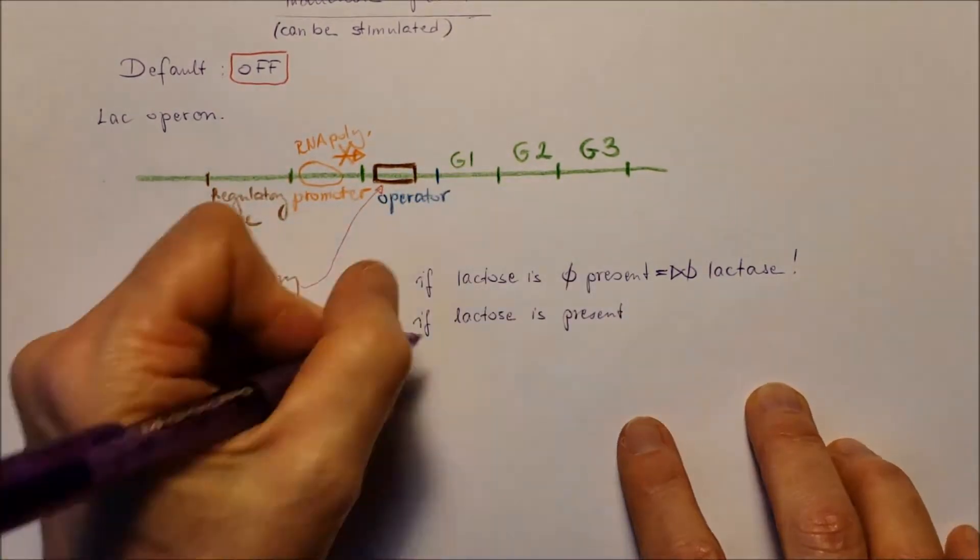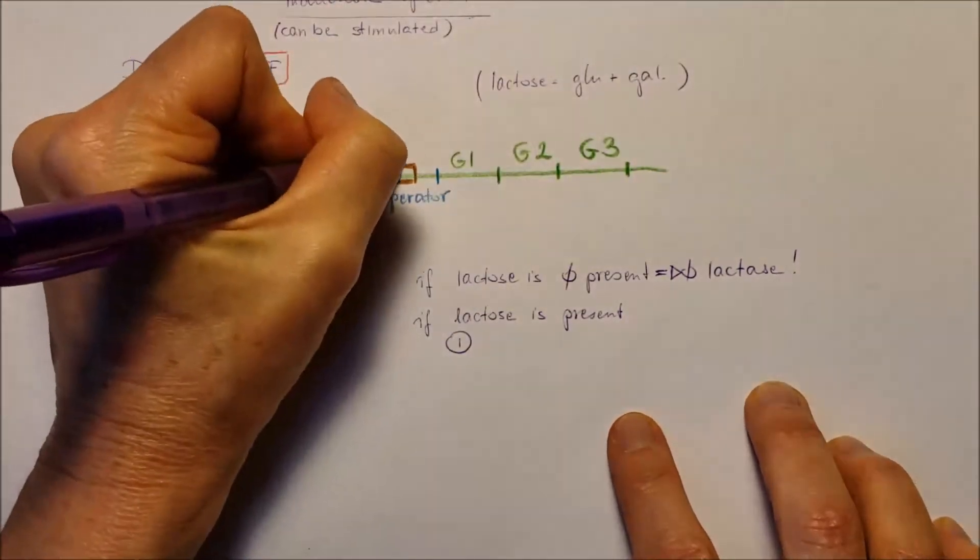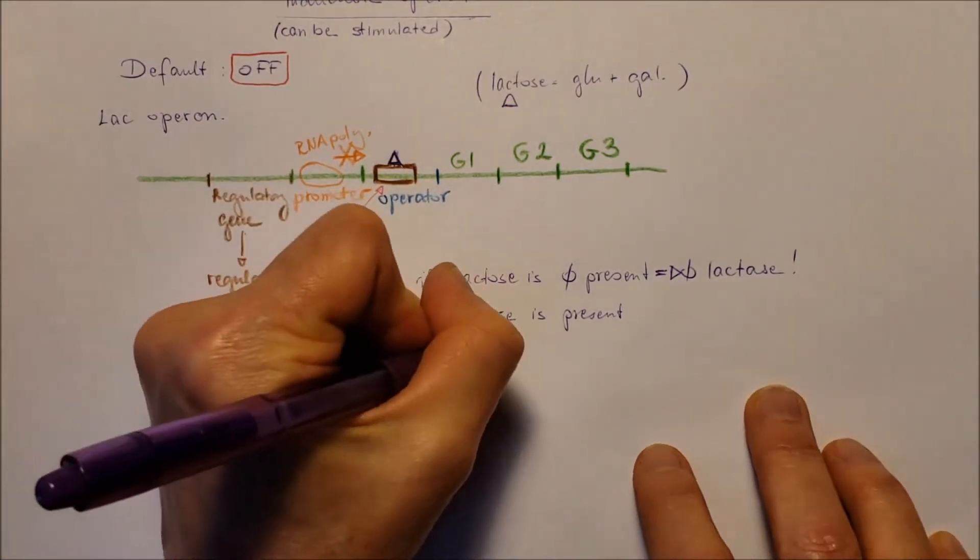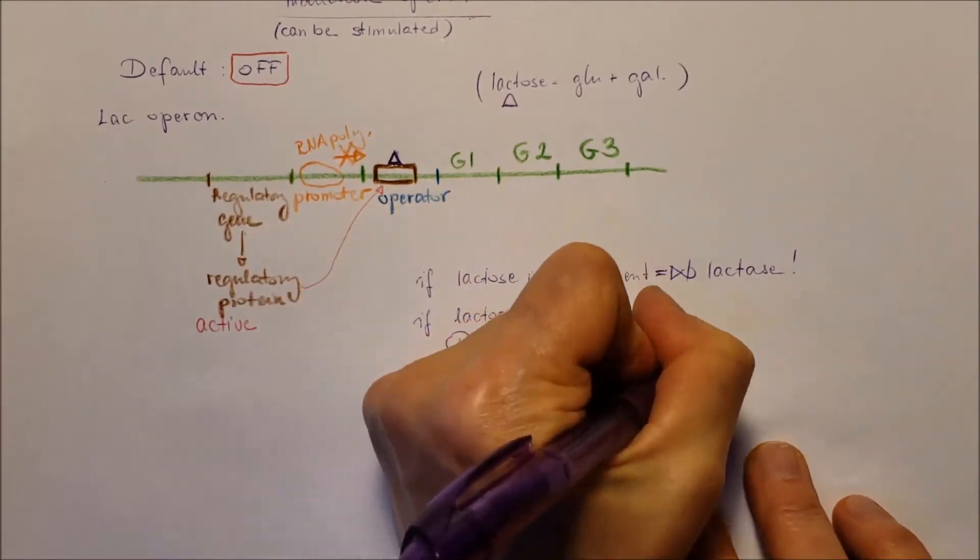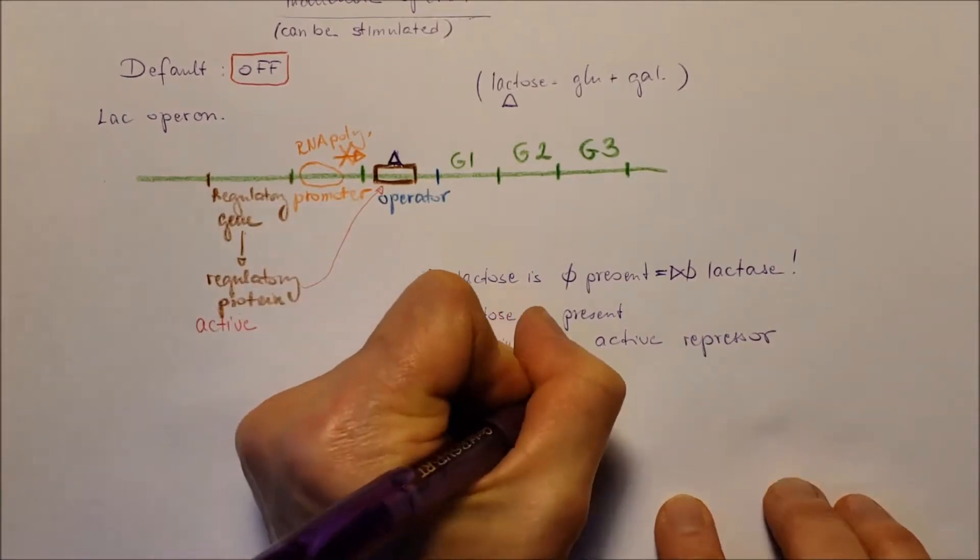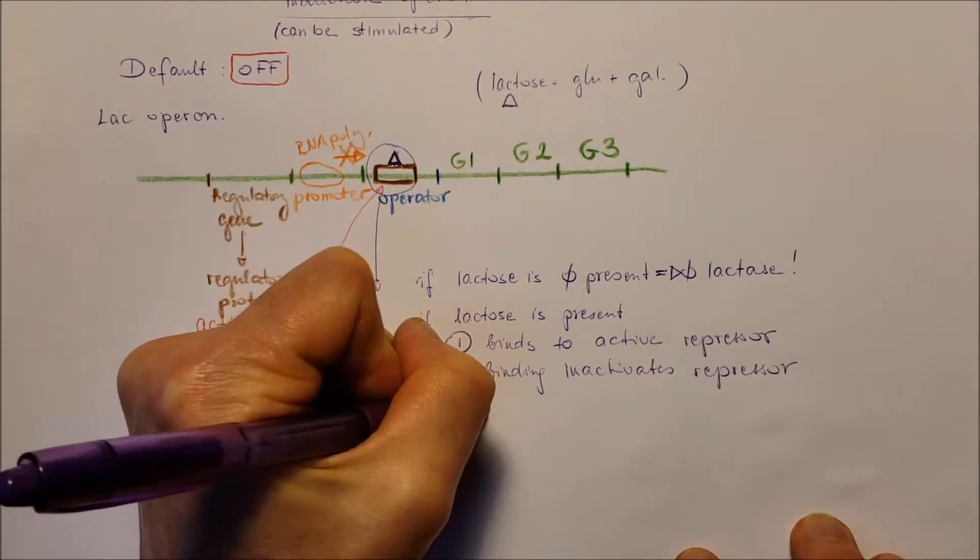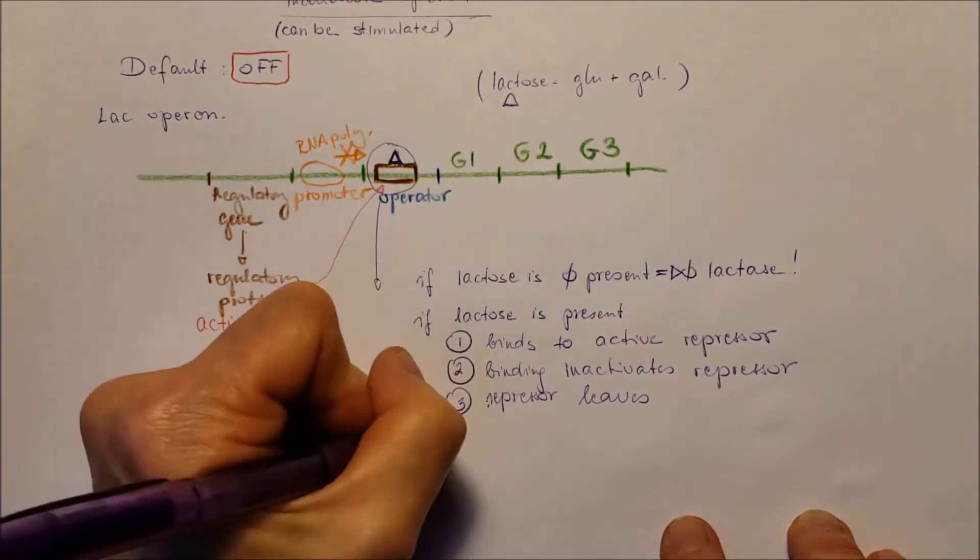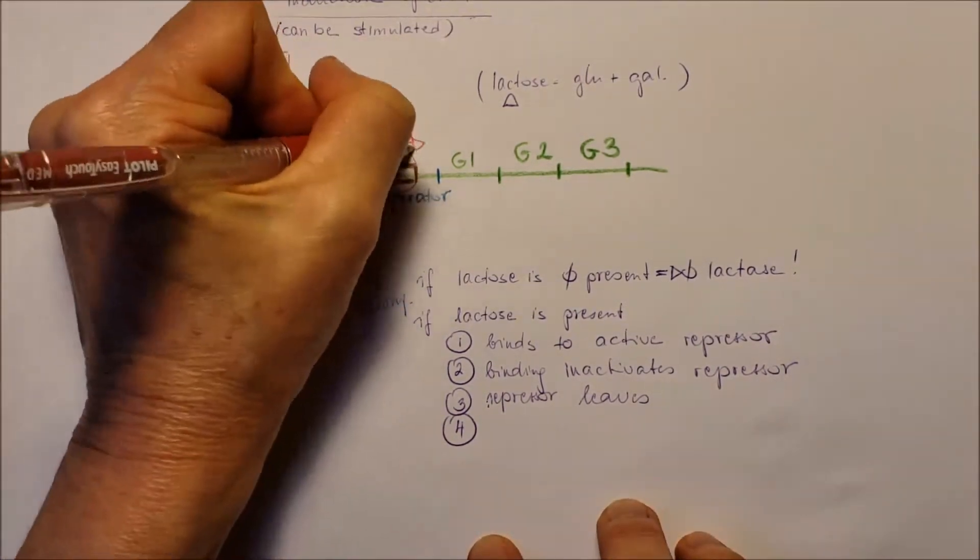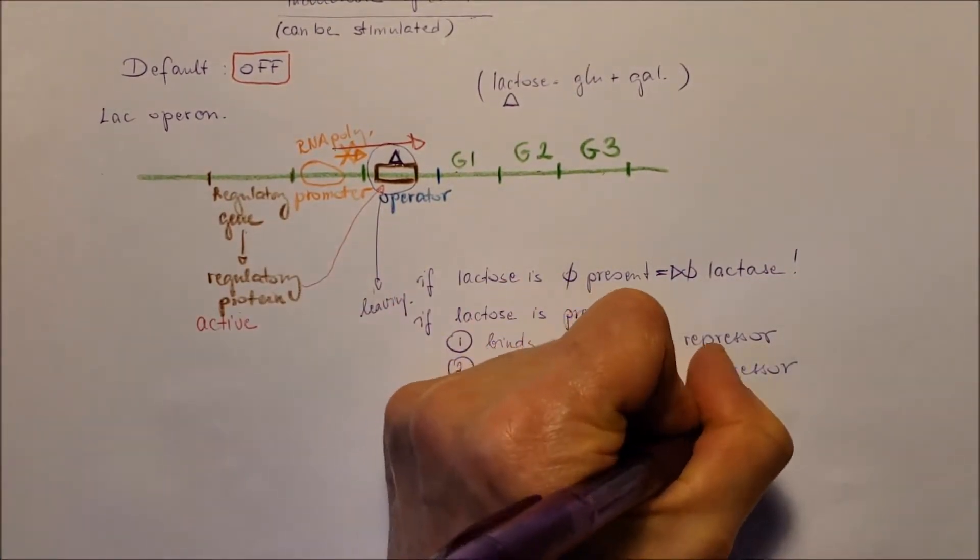But if lactose is present, the lactose is going to bind to the repressor and deactivates it, inactivates the repressor. After the repressor gets off, this whole complex will get off of the operator, and the RNA polymerase will be able to transcribe the enzymes, and the enzymes will be able to break down the lactose.